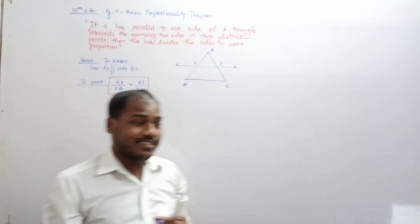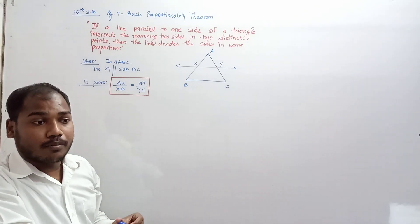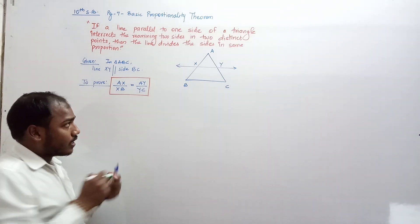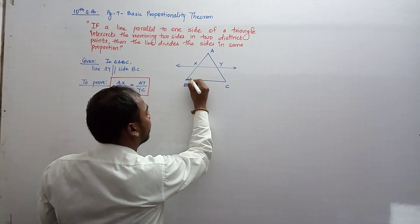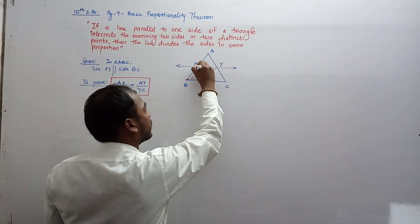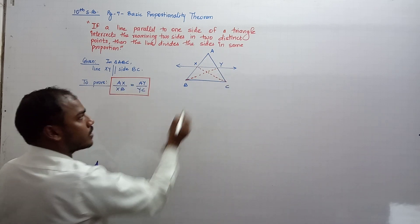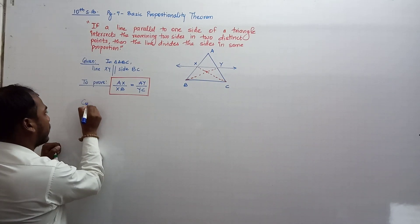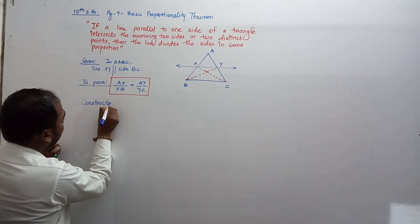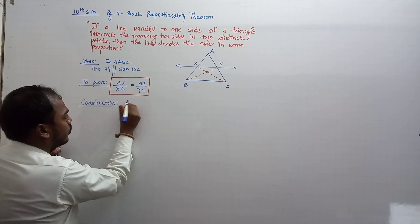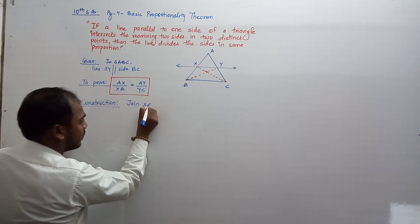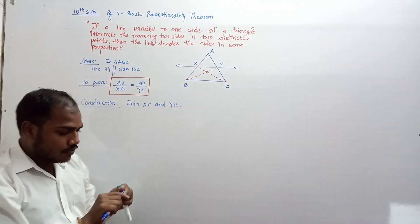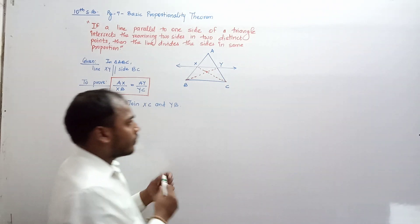To prove this, we will use the concept of the ratio of areas of two triangles. For construction, we join B to Y and X to C. So the construction is: join XC and YB.